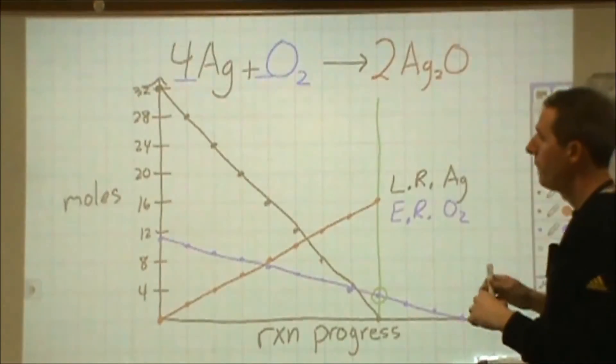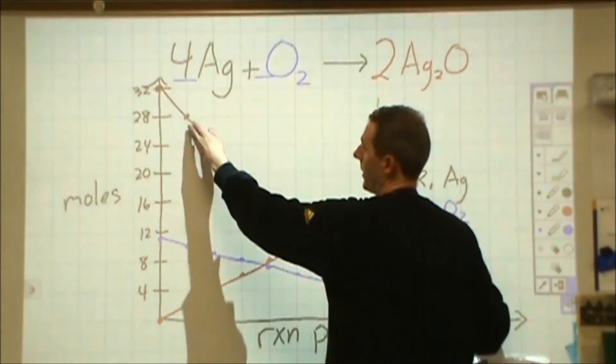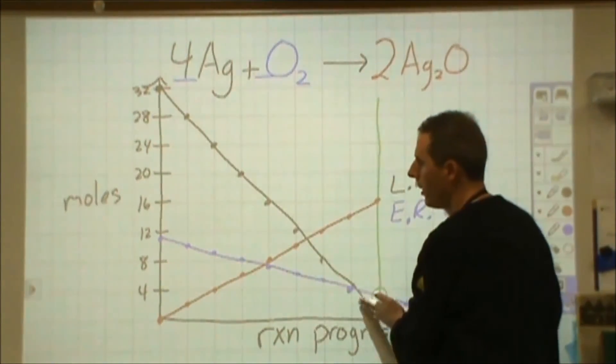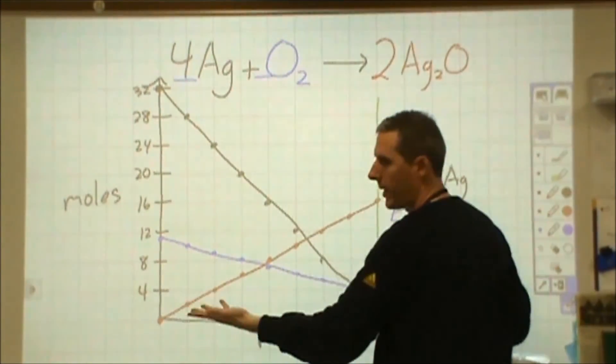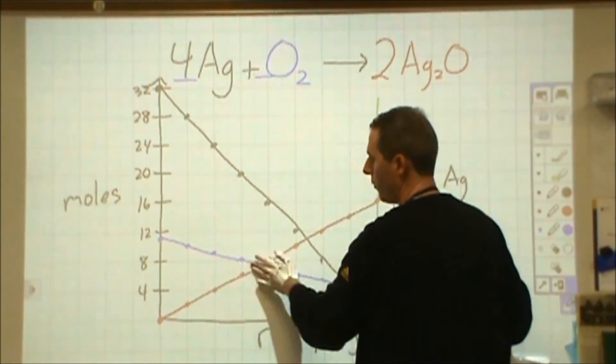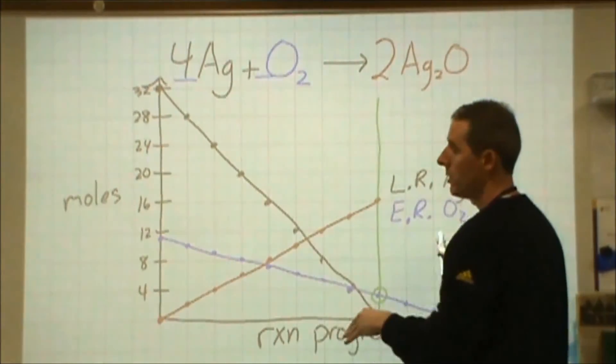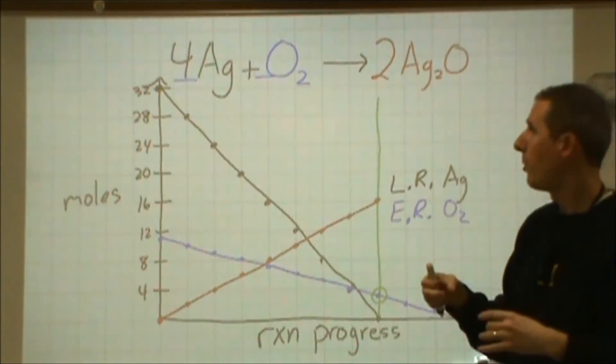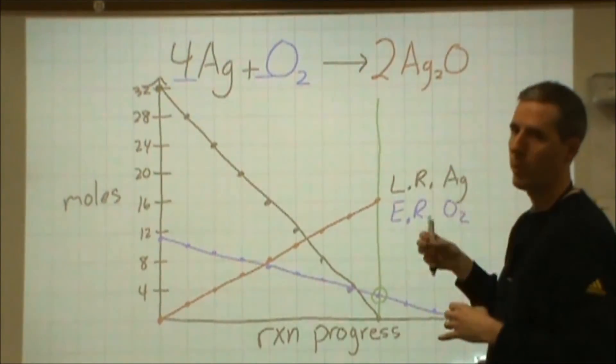And if we go back to our graph, if we were to analyze this from a slope perspective, the slope of this line is negative four if we include one space. The slope of this line is negative one, and the slope of this line is positive two. So these slopes are proportional in that four to one to two ratio.